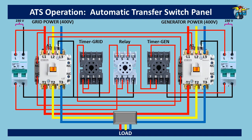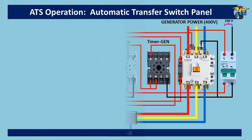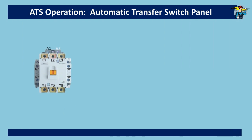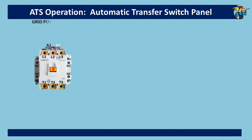To start with the basics, first we have a contactor for the three-phase 400-volt supply from the grid.